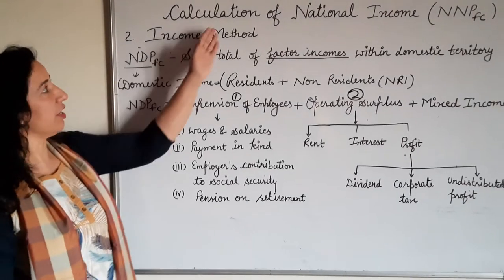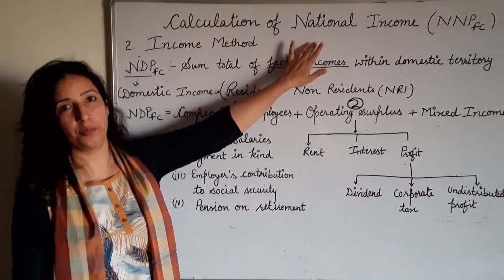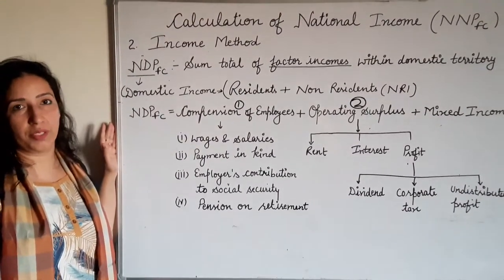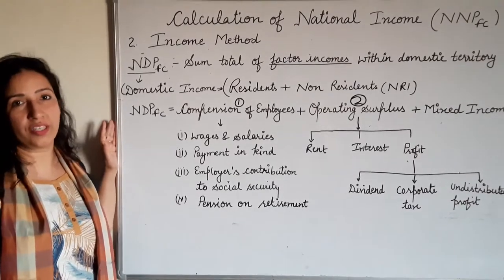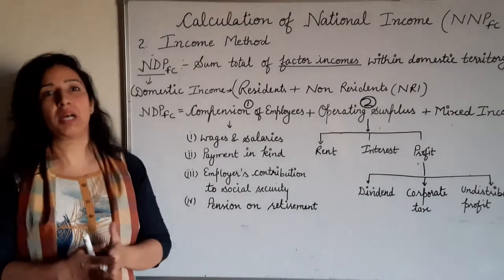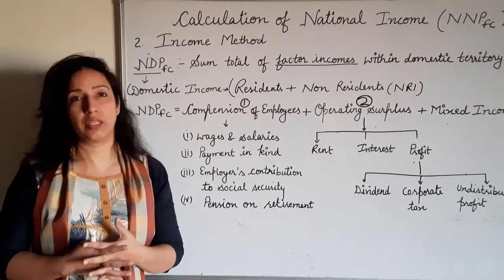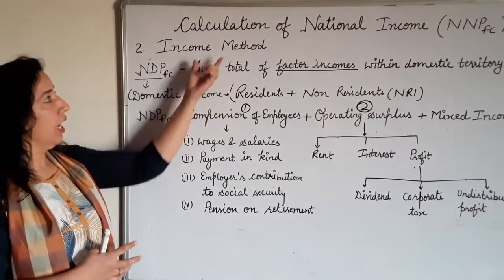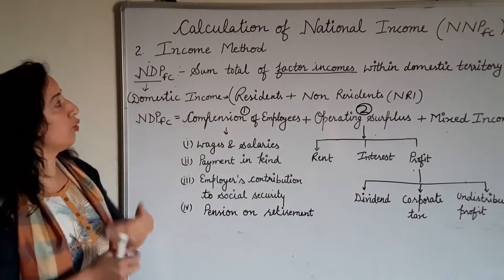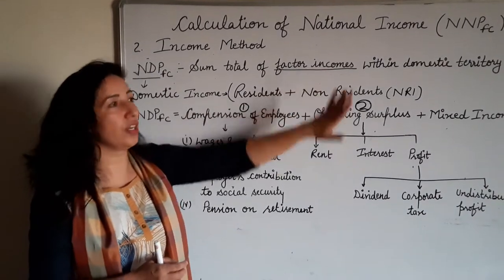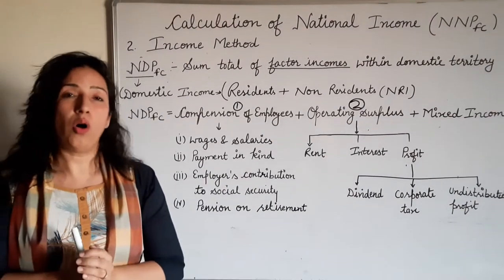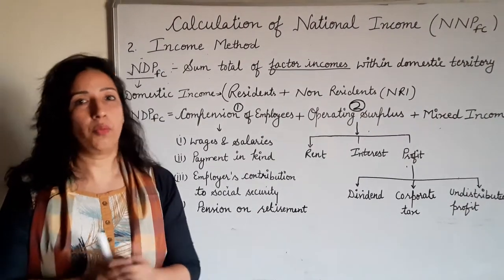Hello students. In the series of calculation of national income, today we are going to learn the second method, that is the income method — how we can calculate national income with the help of income method. Under the income method, we are going to do the sum total of factor income within a domestic territory, meaning we add all the factors' income within a domestic territory.